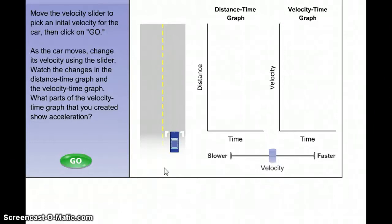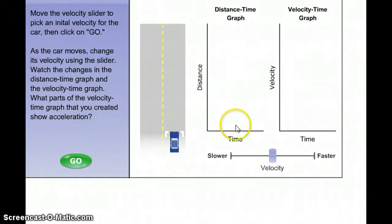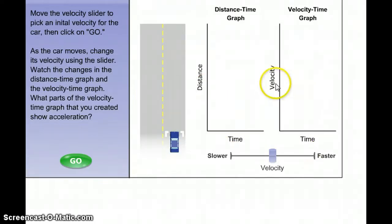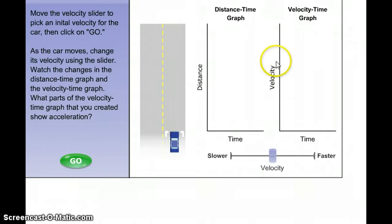Hi guys. Since you've already done your homework on the pre-read for the speed-time graph, I wanted to show you something about the difference between a distance-time graph and a speed-time graph, also known as a velocity-time graph, because velocity and speed can be used interchangeably — velocity just means speed and direction.